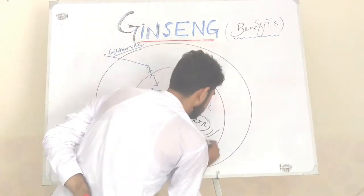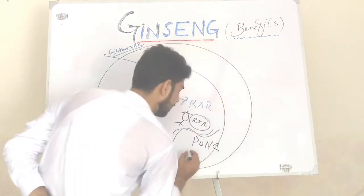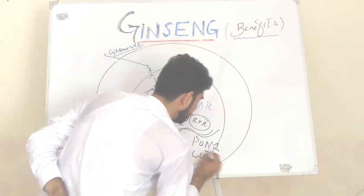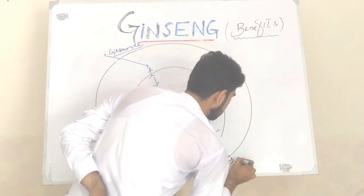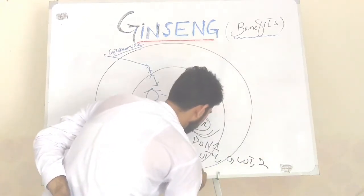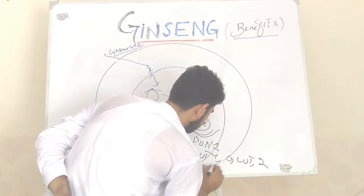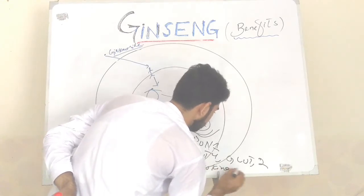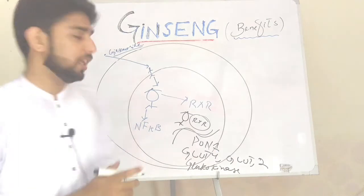It increases the expression of genes like PO1 gene, glut4, glut2, and glucokinase. When it binds with nuclear factor kappa B...